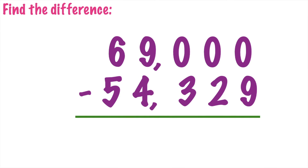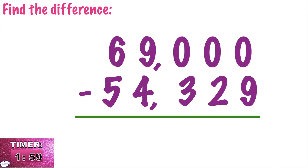Let's have the last number: 69,000 minus 54,329. Write your answers on your drill board. Timer starts now.